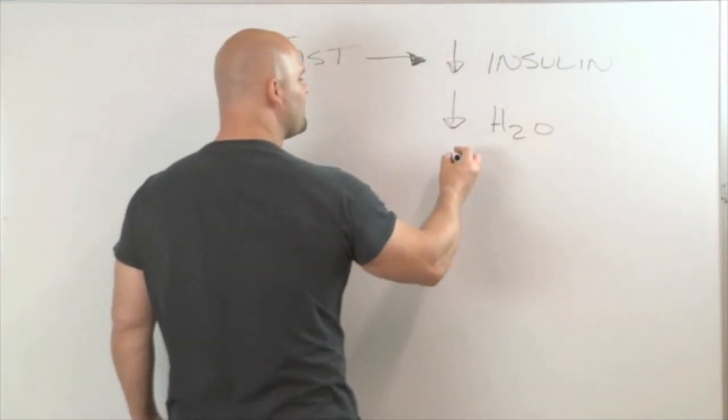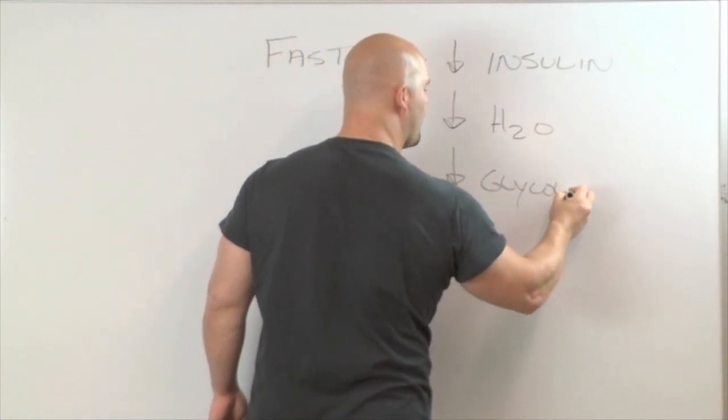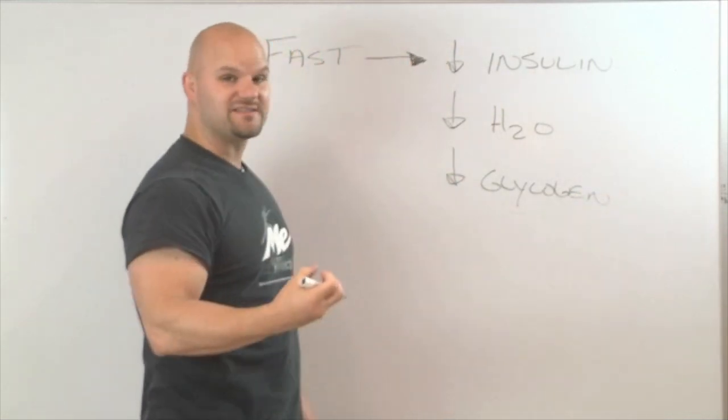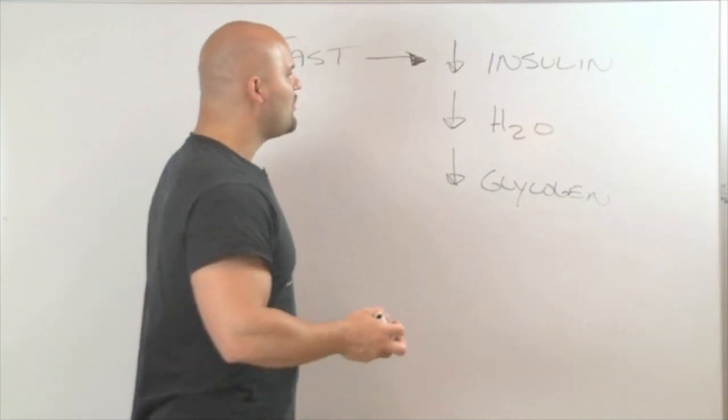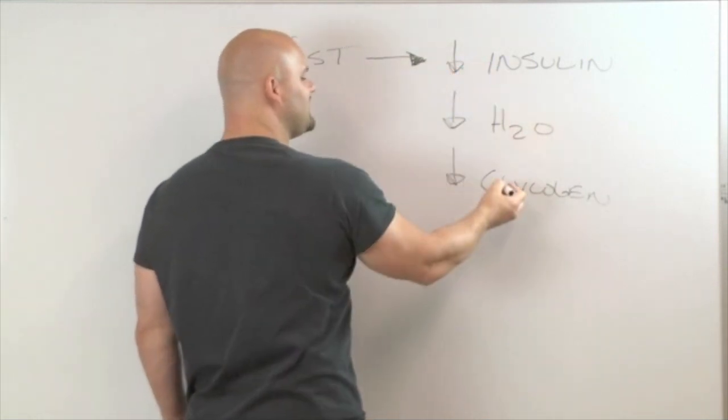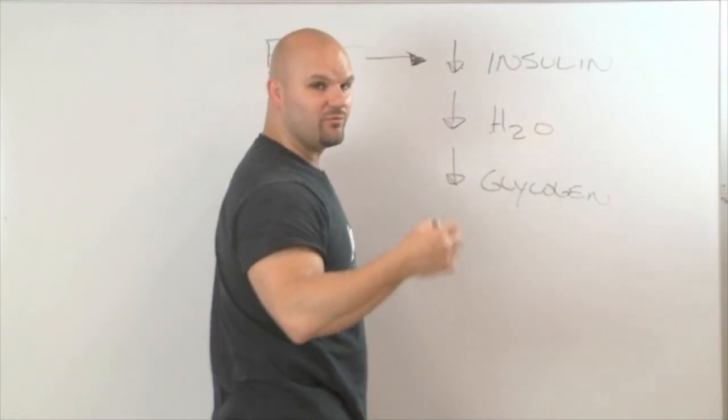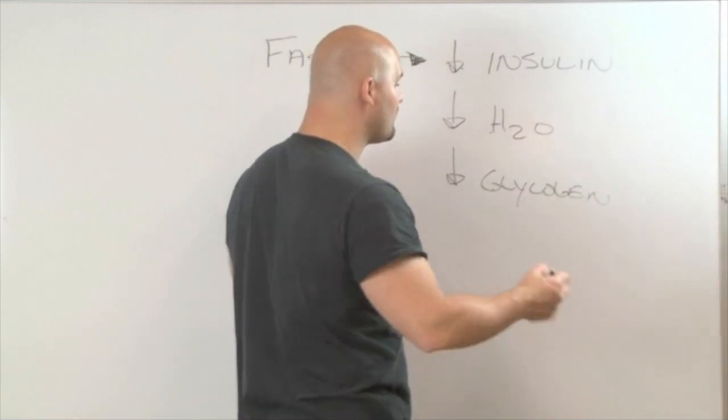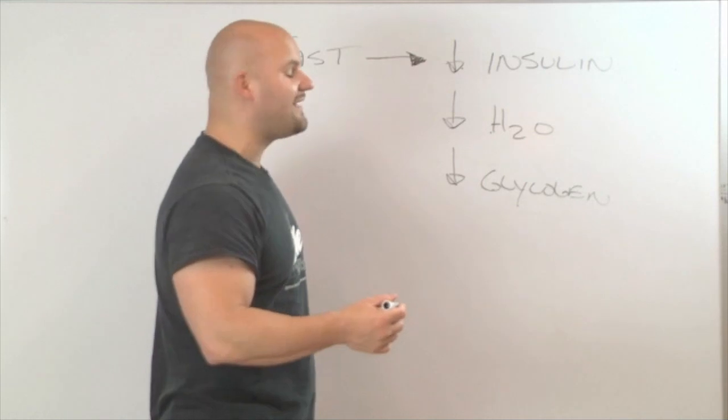And you also burn through a bunch of your glycogen stores, which also make you hold on to water. Glycogen stored in liver and muscle tissue is sort of like a sponge. It holds about three times its weight in water. So when you decrease insulin, you decrease sodium, your body gets rid of sodium, which then you get rid of water, and you also burn through your glycogen stores, which makes you get rid of more water. So you get a really big drop in water pretty quickly when you fast.